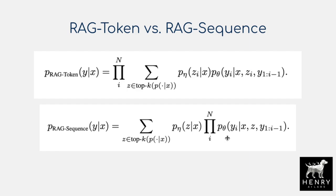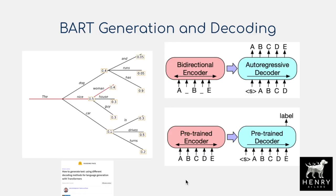Beam search is used to actually decode from these models. From a high-level idea, the BART model is a sequence-to-sequence model that encodes the entire concatenated sequence — the Z latent documents, the input X, and Y_1 up to Y_{i-1} — and then starts decoding to reconstruct the sequence. In the greedy search illustration, at each time step it takes in a token as Y_{i-1} and predicts the next token — say dog, nice, or car — putting a probability on each generation, such as 50% on nice, 40% on dog, and 10% on car.